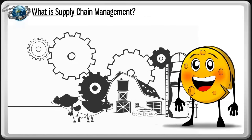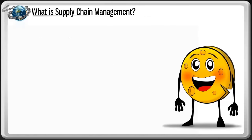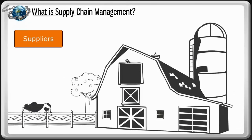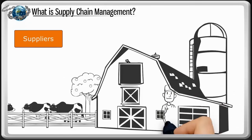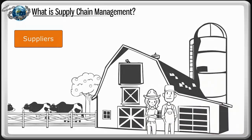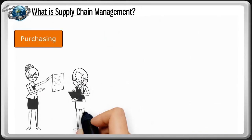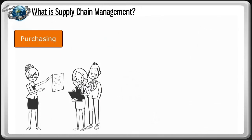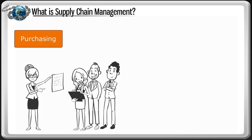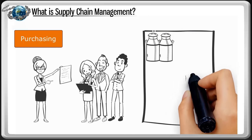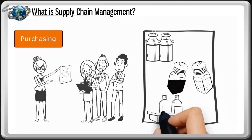Let's start with the suppliers who provide all of the raw materials. It all starts with the dairy farmers who raise and milk the cows. They provide the milk. The purchasing team coordinates purchases from these and other suppliers who provide additional cheese-making ingredients like milk, salt, rennet, and whey.